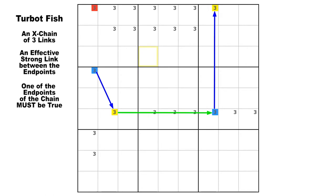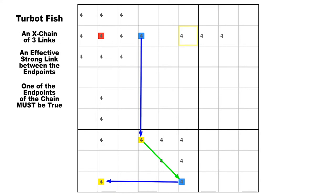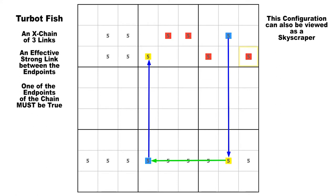You can safely apply the term turbo fish to any three-link X-chain, but a turbo fish is generally going to have a diagonal link in it somewhere within a block, and it will usually be the first or the third link. The middle link of a turbo fish can be diagonal, but when that is the case, the chain is more often referred to as a two-string kite. And if there are no diagonal links — if all three links are vertical and horizontal, lying exclusively in columns and rows — then that configuration is more often referred to as a skyscraper.